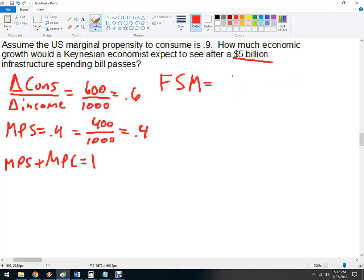Because I want to multiply that by $5 billion, and that's going to be the amount of growth and the aggregate demand in the overall economy. So, fiscal spending multiplier is 1 over 1 minus the MPC.